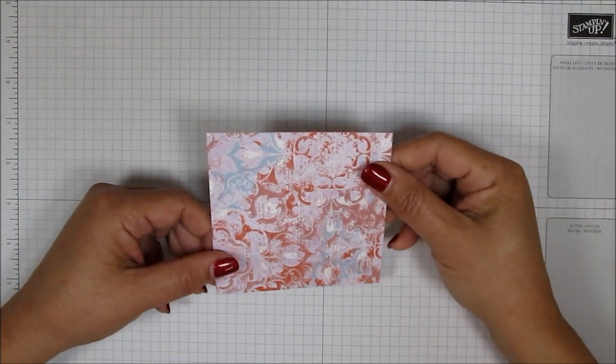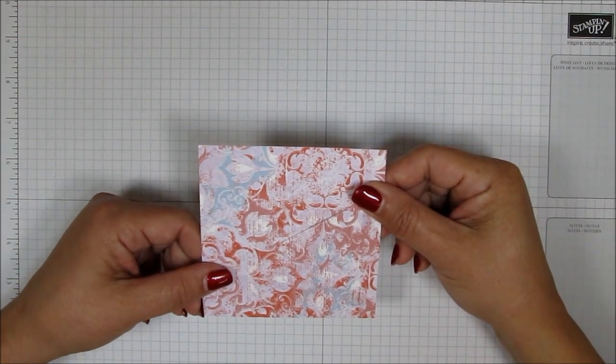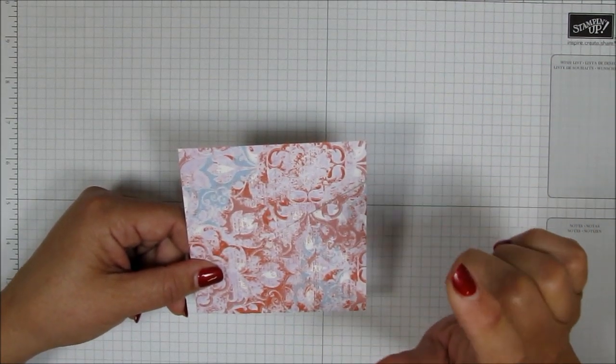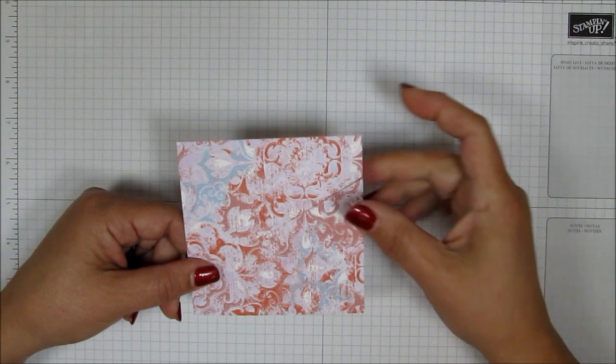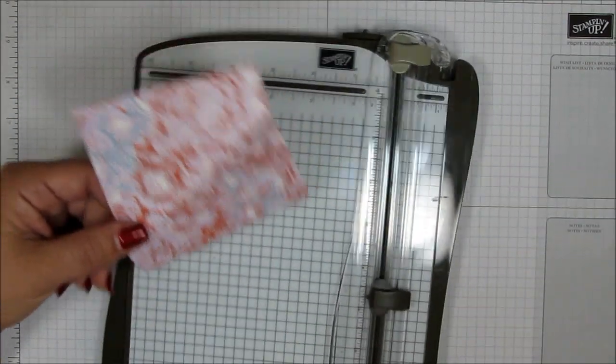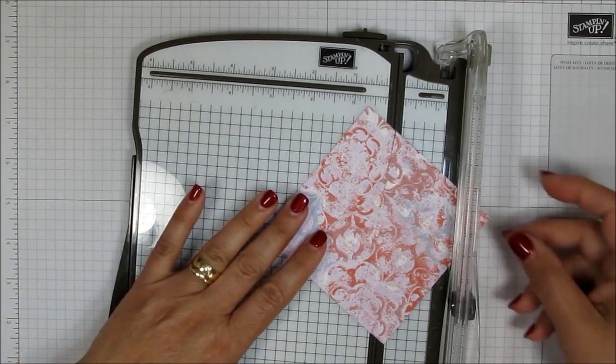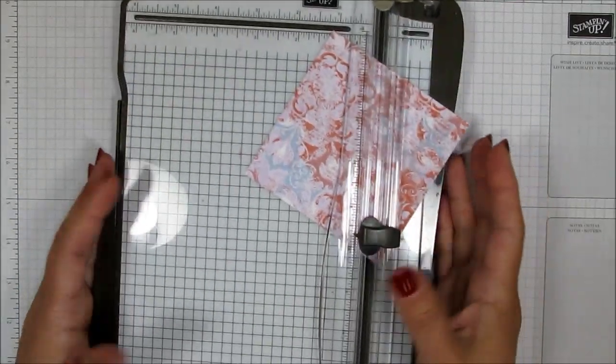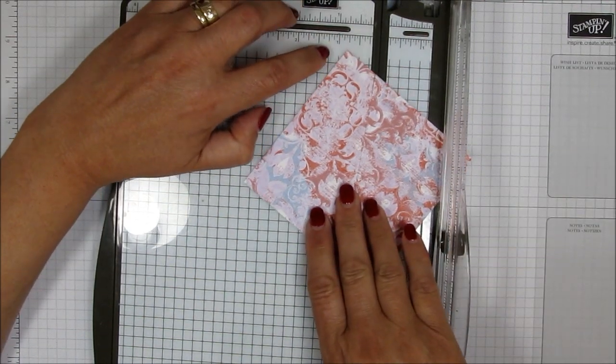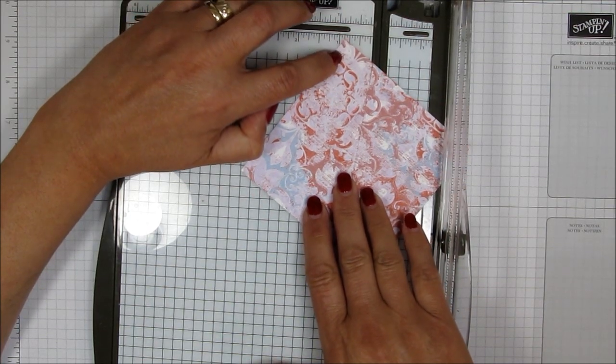So to begin, you're going to need a piece of designer series paper and this one is from the woven threads designer series paper stack or pack and this one measures four inches by four inches. And then what you're going to do is you're going to take your cutter. This is the stamp and trimmer that they don't sell anymore. But what you'll do is you'll take your trimmer, whatever trimmer you use, and you want to line this up at the one, you could go like three quarters of an inch or you can go seven eighths of an inch.